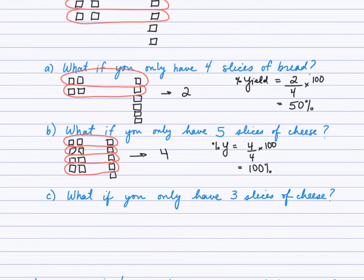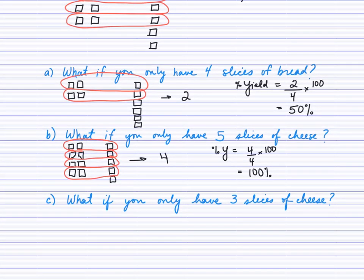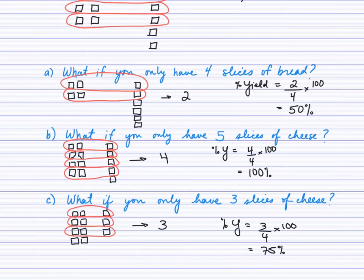What if you have only three slices of cheese? In decreasing the cheese to only three slices, the cheese actually became the limiting reagent. We can only produce three sandwiches, which produces a yield of 75%.